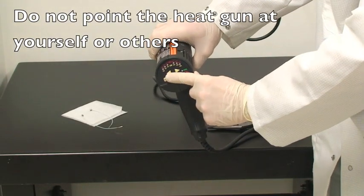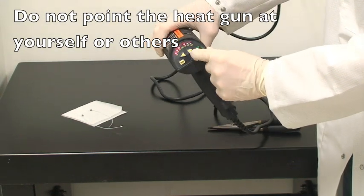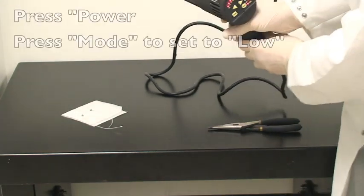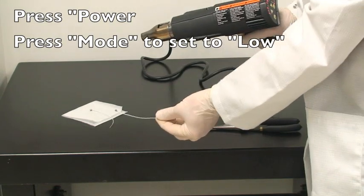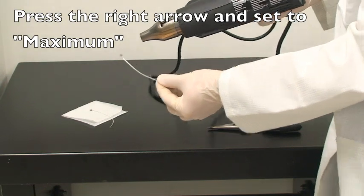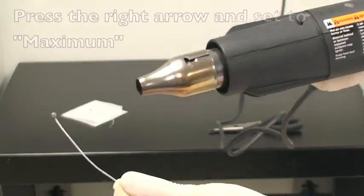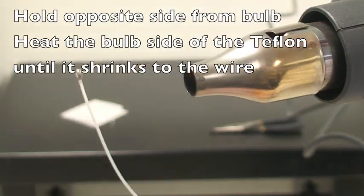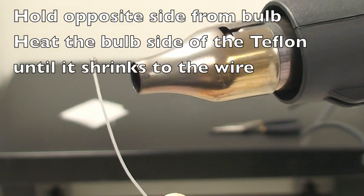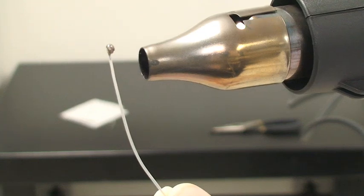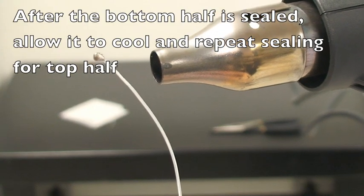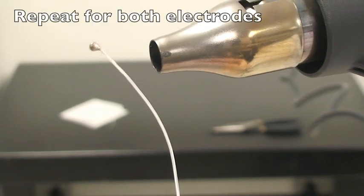We'll now use the electric heat gun to shrink the Teflon onto the wire. Both the metal tip and the air coming out can cause burns, so please use caution with the heat gun. You may power it up by pressing the power button, and then press the mode button until a setting of low is on the display. Then use the right arrow to set the heat to the maximum level. Now holding the lead side of the electrode and ensuring that the Teflon stays pushed up against the bulb, we'll heat the bulb side of the shrinkable Teflon. Once the Teflon has sealed the bulb side of the electrode, allow it to cool and then repeat on the lead side of the electrode. And repeat for both electrodes.